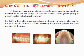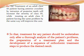Goals of the first stage of treatment. Orthodontic treatment without specific goals can be illustrated by the old saying: if you don't know where you are going, it doesn't matter which route you take. The best alignment procedure will result in incisors that are far too protrusive if the extraction necessary to prevent protrusion were not part of the plan. Treatment of an adult class 3 patient with anterior crossbite by intrusion of posterior teeth will increase the severity of class 3, while treating an adult class 2 patient with the same problem the same way will improve the case. So treatment for any patient should be undertaken only after thorough analysis of the patient's problem, the preparation of a treatment plan, and development of a sequence of orthodontic treatment steps to produce the desired result.